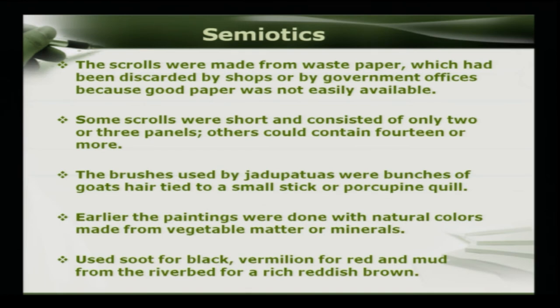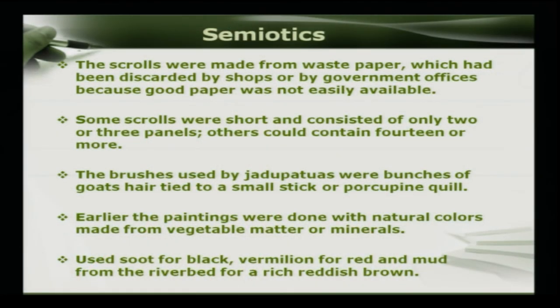The scrolls were basically made from waste paper discarded by shops and government offices because good paper was not easily available. The scrolls were short, consisting of only two to three panels, but sometimes could contain up to fourteen panels or more. The brushes used by Jadu Patuas were bunches of goat hair tied to a twig or a porcupine quill. Earlier the paintings were done with natural colours from vegetable matter or minerals, but nowadays they also use soot for black, gondolin for red, and mud from the river bed for a rich reddish brown.